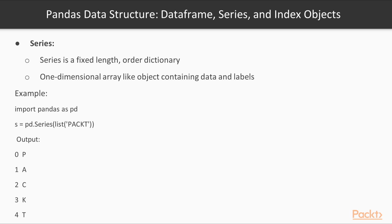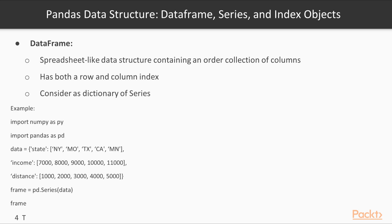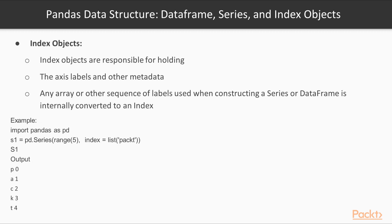A series is a fixed-length, one-dimensional array which contains data and a label. A data frame is like a spreadsheet which contains the dataset in rows and columns. Index objects are responsible for holding the label and other metadata.